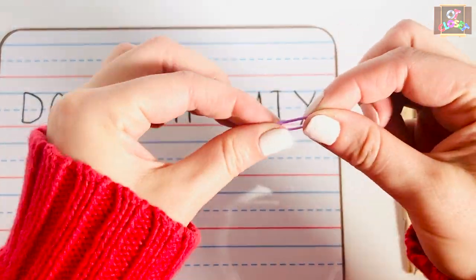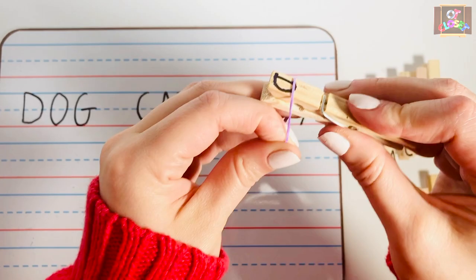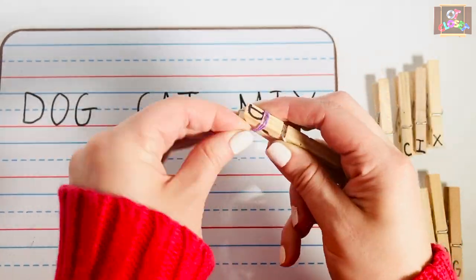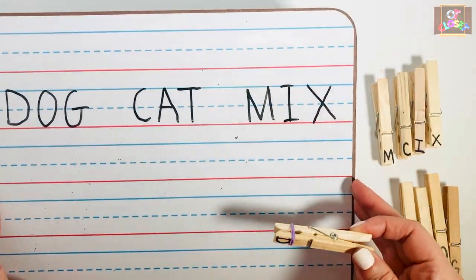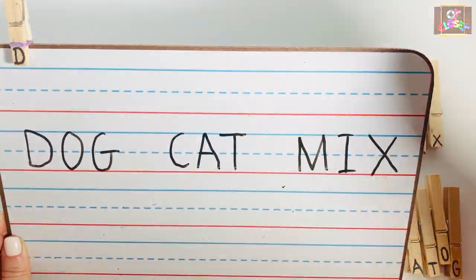Use the rubber band around the clothespins to provide more resistance. Read and match the letters to make simple words.